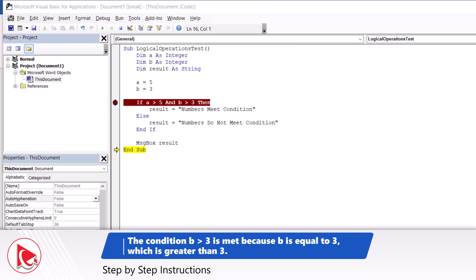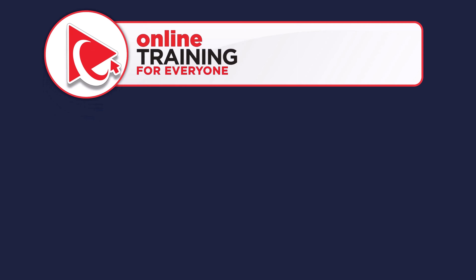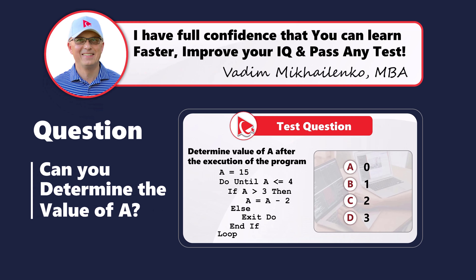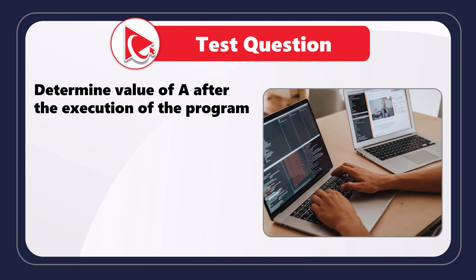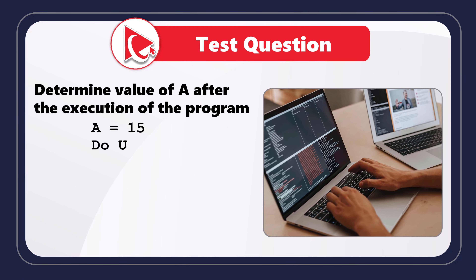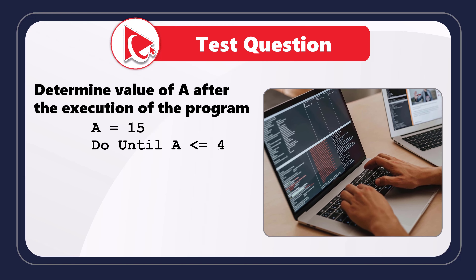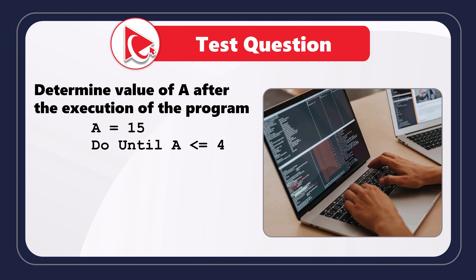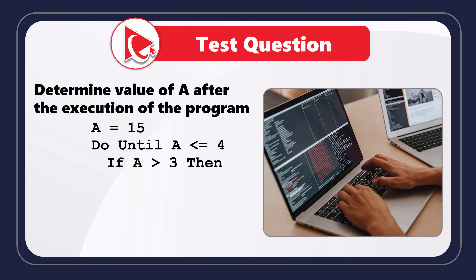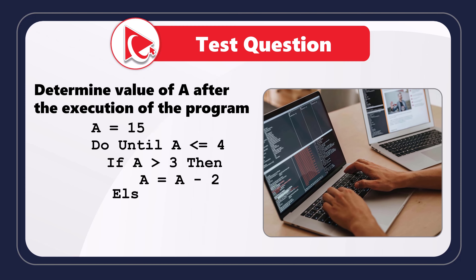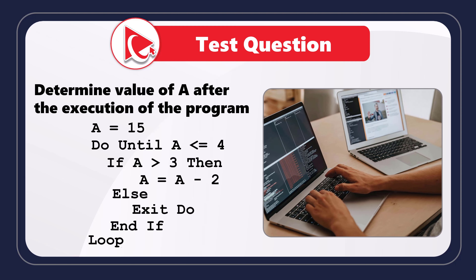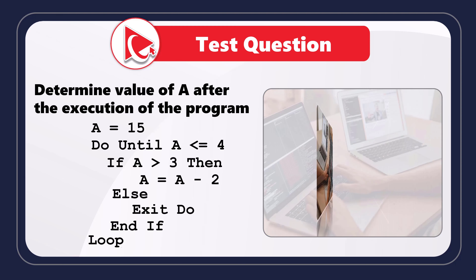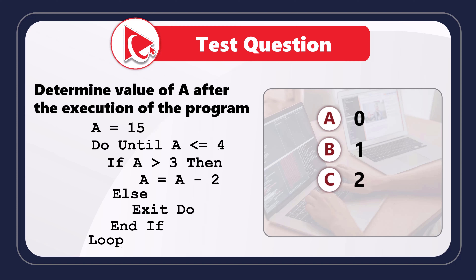Here's an amazing question to test your programming skills. You need to determine the value of A after the execution of the program. The initial value of A is 15. The logic is: Do Until A is less than or equal to 4 — if A is greater than 3, then A = A minus 2, else Exit Do. When you finish the calculation, select the final value of A from four choices: Choice A is 0, Choice B is 1, Choice C is 2, and Choice D is 3.